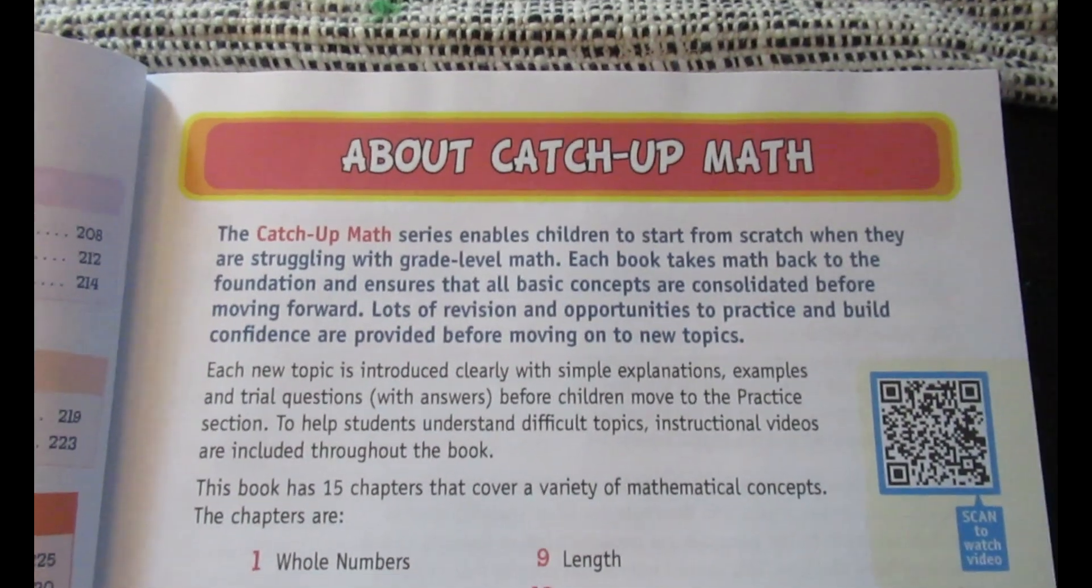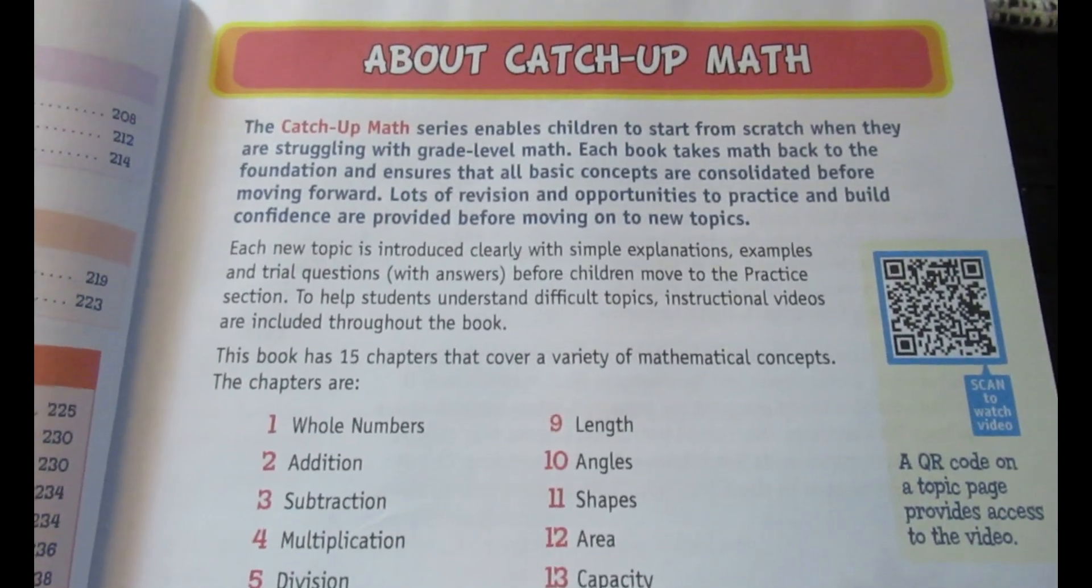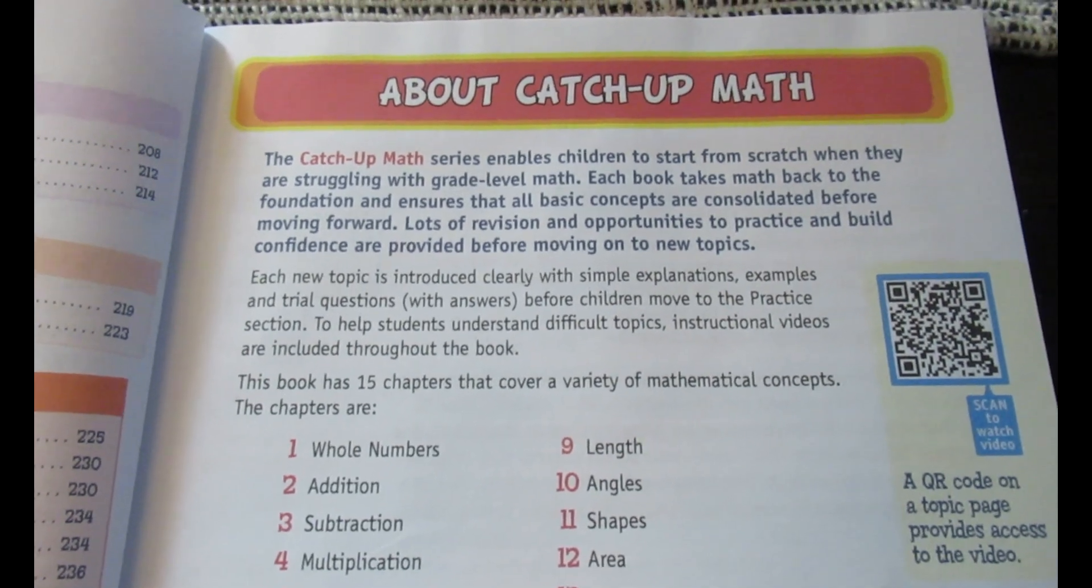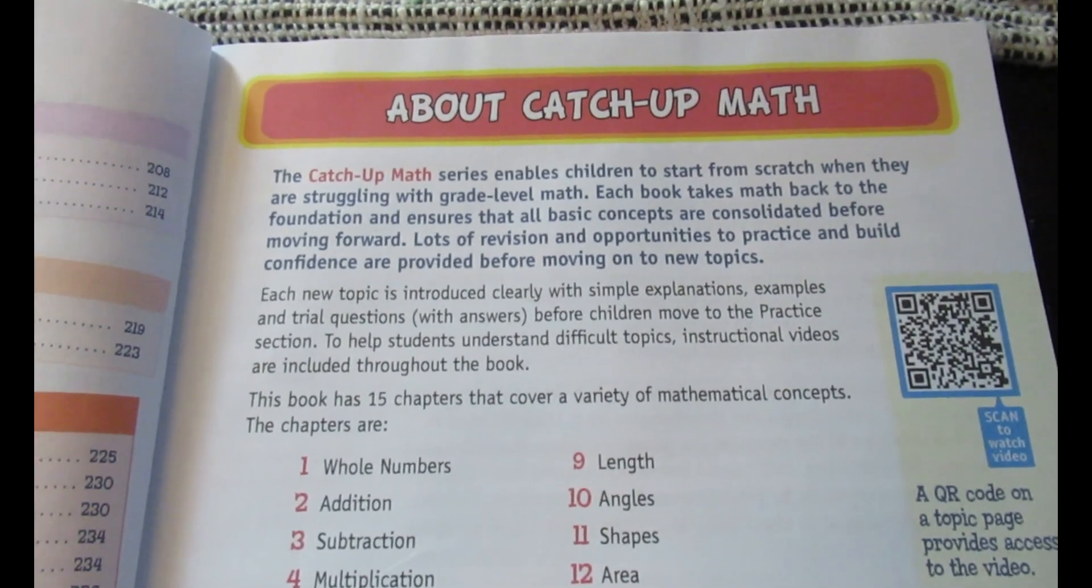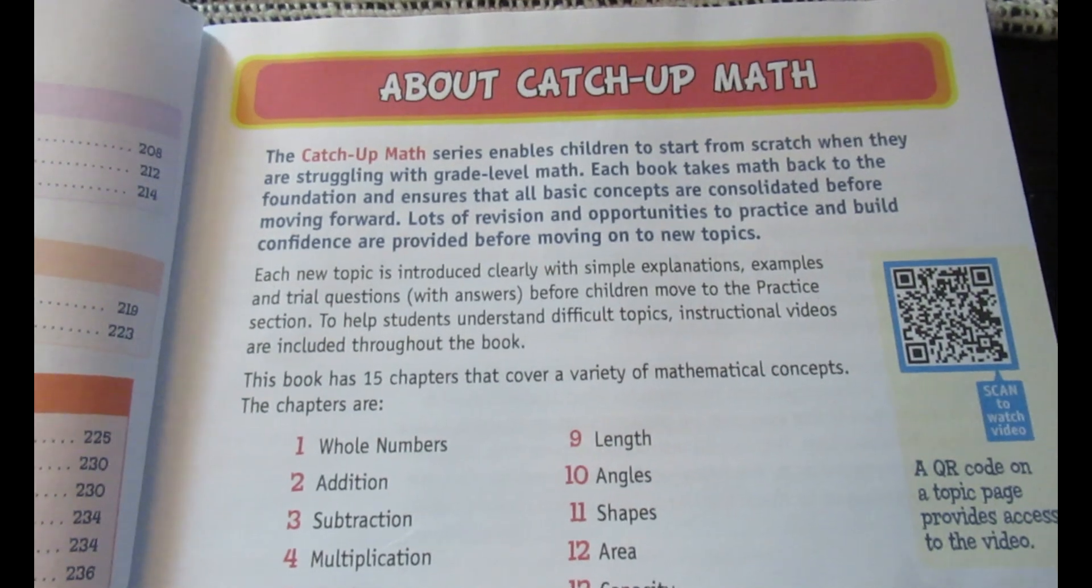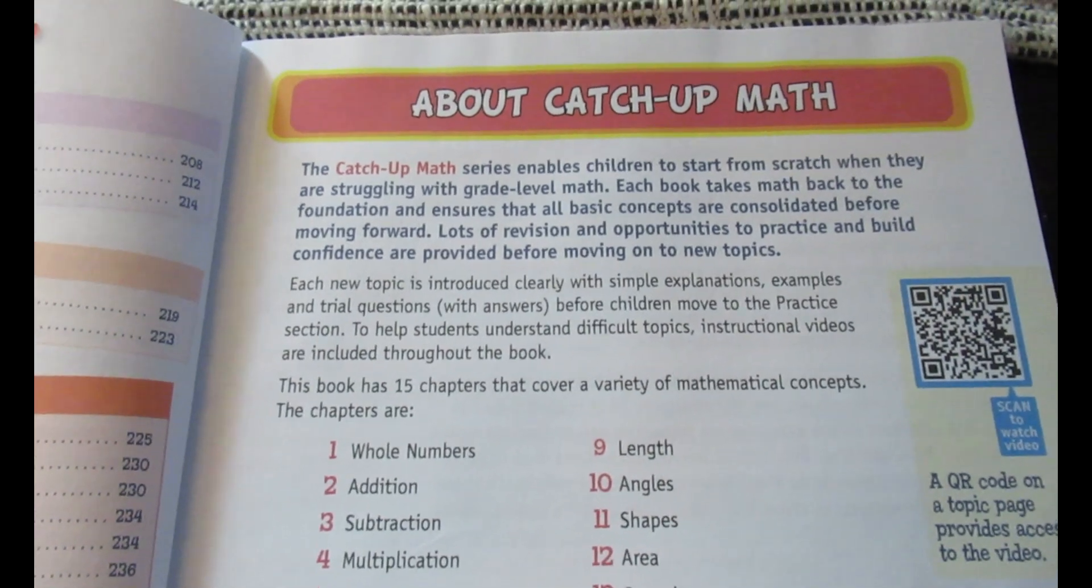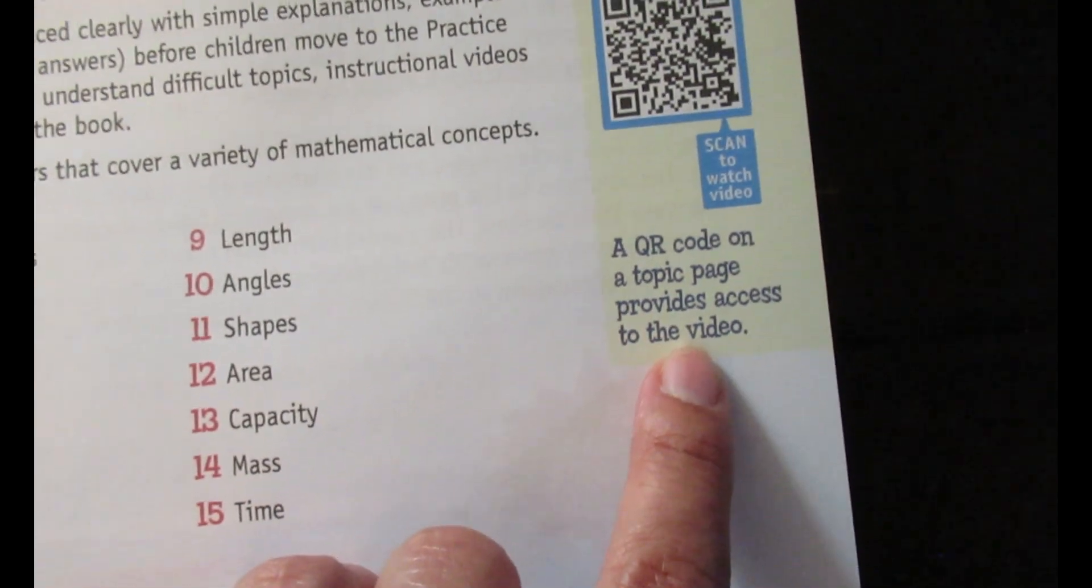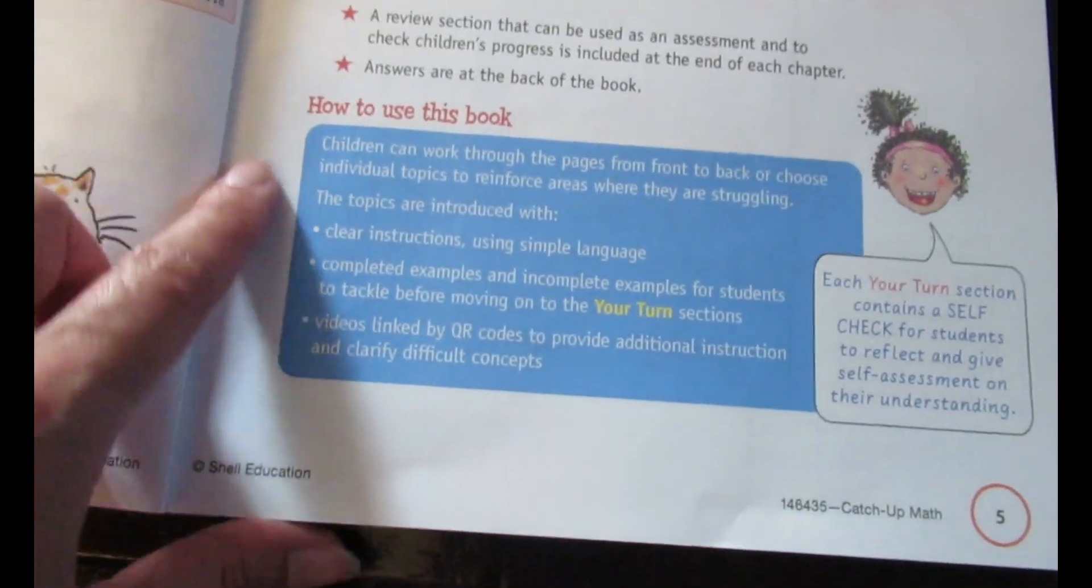Mass: kilograms and pounds, grams and ounces, time tables. Then there is an answer key at the back. About Catch-Up Math: this series enables children to start from scratch when they are struggling with grade-level math. Each book takes math back to the foundation and ensures that all basic concepts are consolidated before moving forward. Lots of revision and opportunities to practice and build confidence are provided before moving on to new topics.